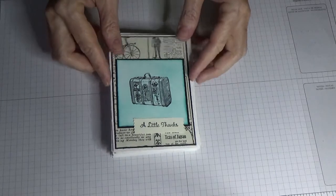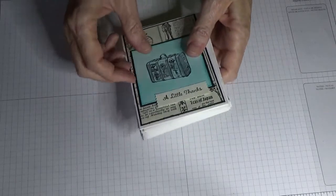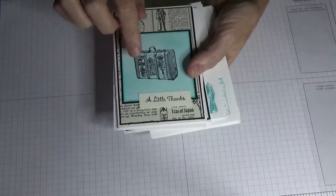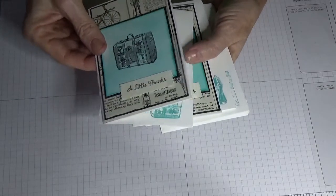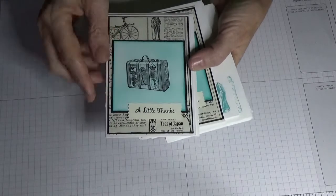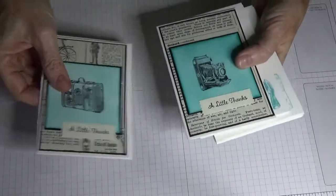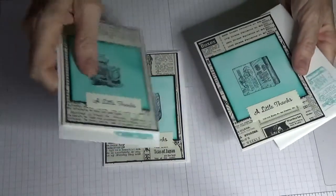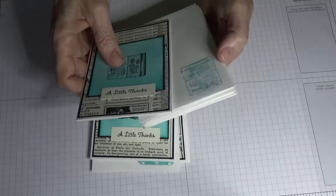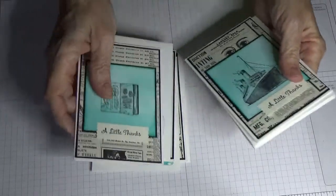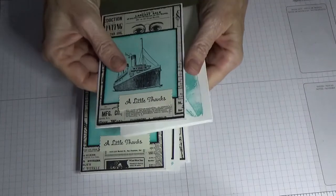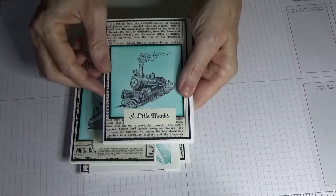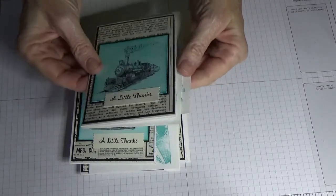So first I'll just show you the six and I have done matching envelopes, so whatever is on the front of the card, that's what I've stamped on the envelope. First we have the luggage, then we have the camera, then we have the journal, the ship, the train, and I'm going to do the last one for you on camera, which is the globe.